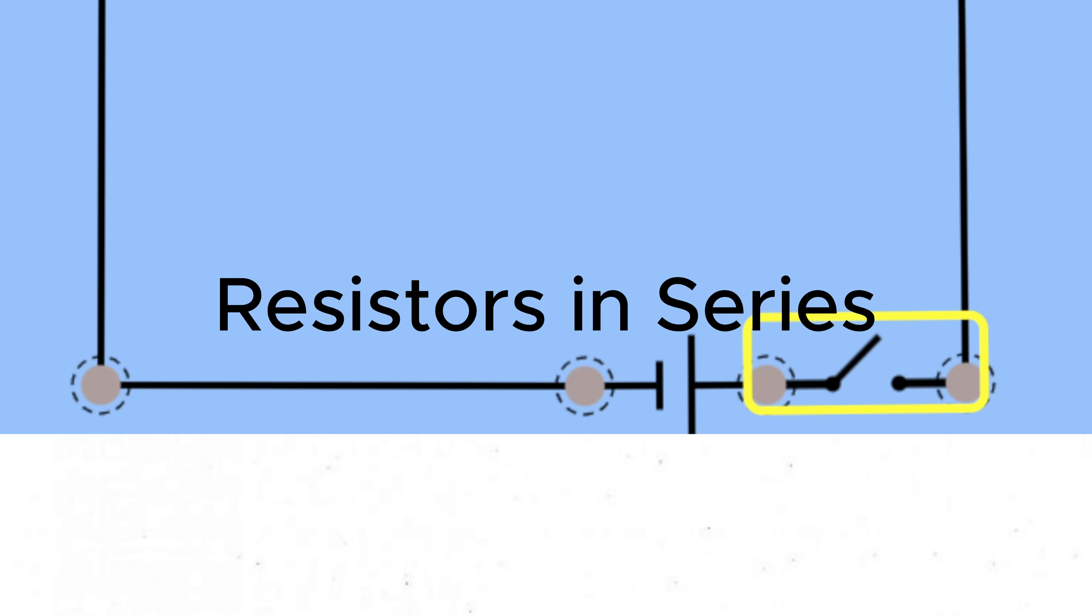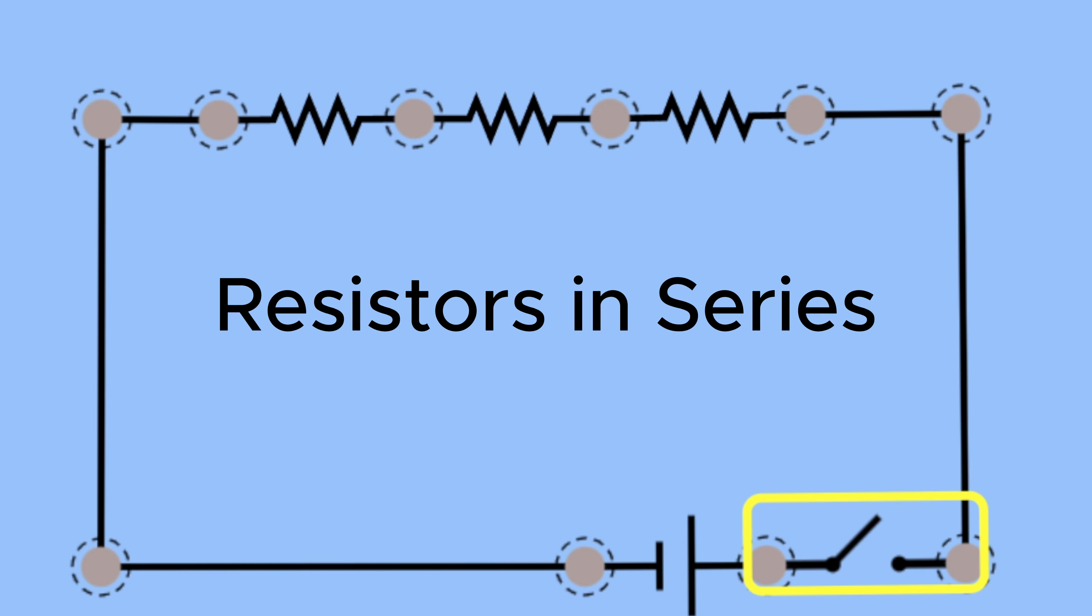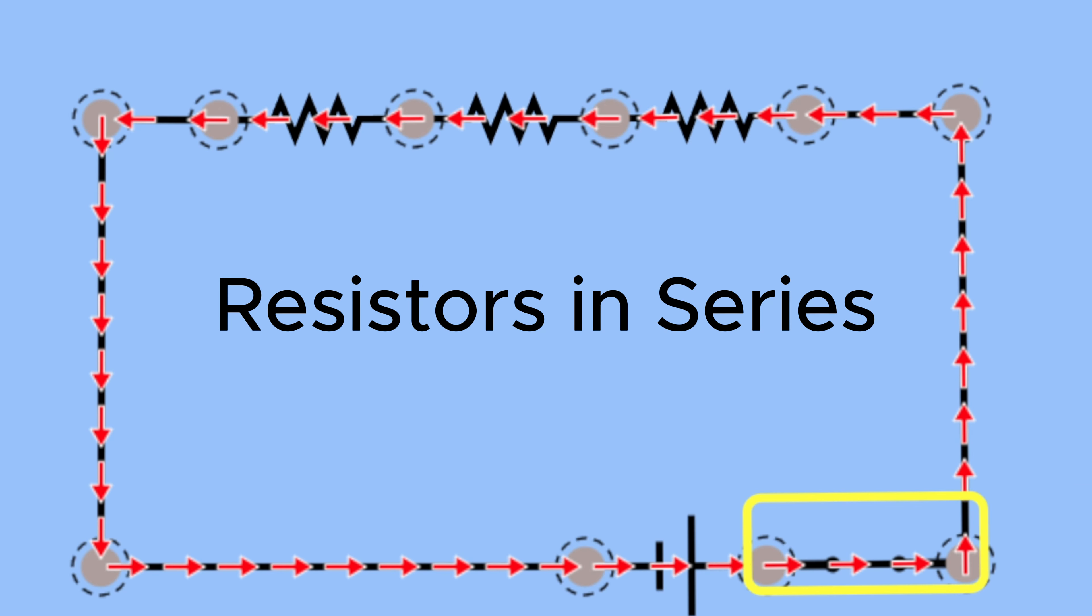Resistors can be connected in a variety of ways. Let's see the first case: resistors in series. Two or more resistors are said to be in series if current has only one path to go through the connection.